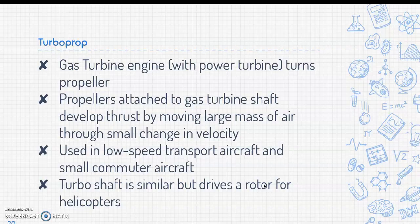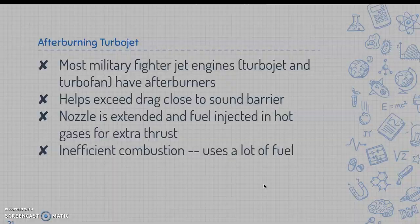The turboprop is a gas turbine engine with a power turbine that turns a propeller. The propellers are attached to the gas turbine shaft and develop thrust by moving large masses of air through a small change in velocity. They're usually used in low-speed transport aircraft and small commuter aircraft. The turboshaft is similar but drives a rotor for helicopters.